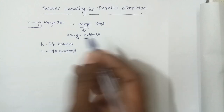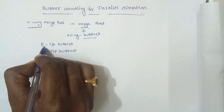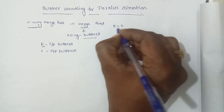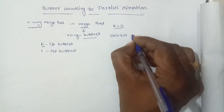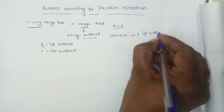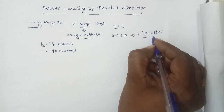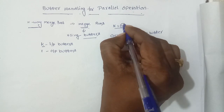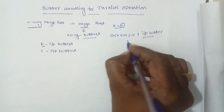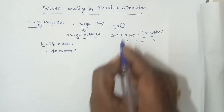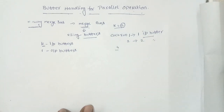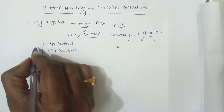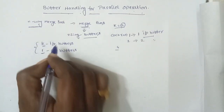k specifies the number of runs to be merged. For example, if k is equal to 2 that means we are merging two runs, and for each run I am maintaining one input buffer — the run is stored in the input buffer. For run 1 we require one input buffer, for run 2 we require a second input buffer. If k is equal to 4 we require four input buffers. And finally the output is stored in the output buffer. So generally we require k input buffers and one output buffer.